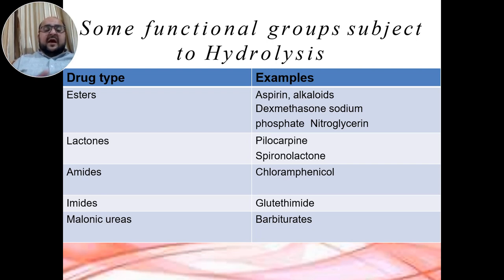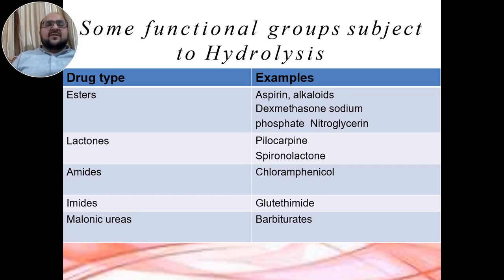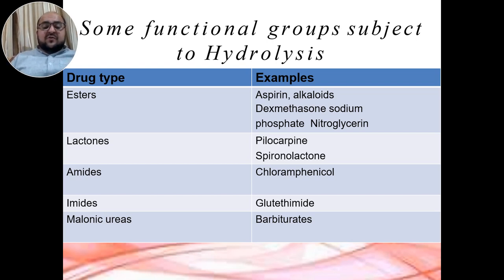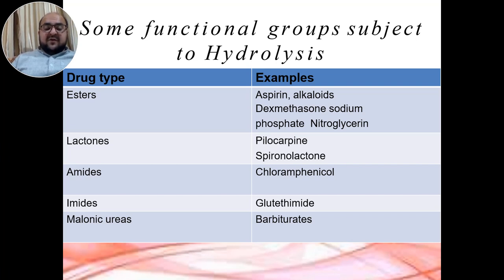Similarly, in the case of lactones, pilocarpine and spironolactone belong to this group. Spironolactone is a potassium-sparing diuretic also used in the treatment of hypertension. For amides, chloramphenicol belongs to this category, which comes under sulfonamides and has strong bacteriostatic activity. Glutethimide also belongs to amides, and barbiturates belong to malonyl ureas.